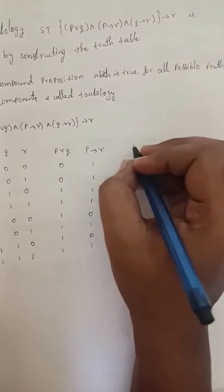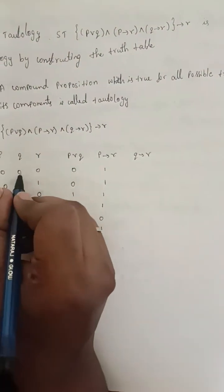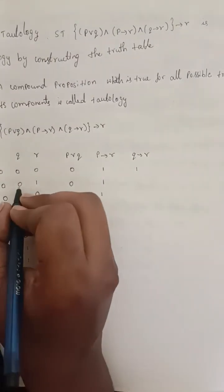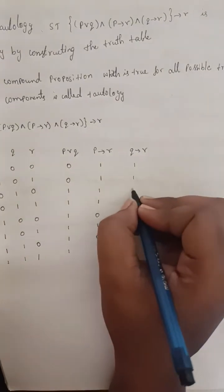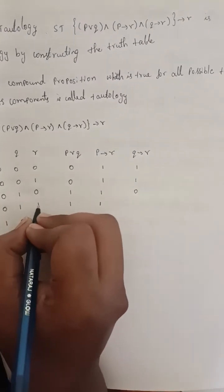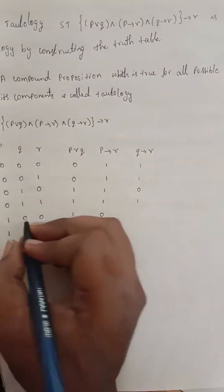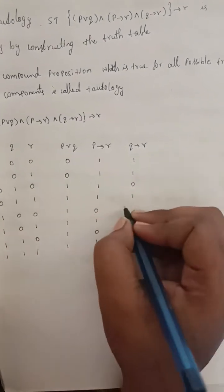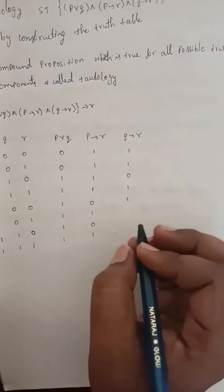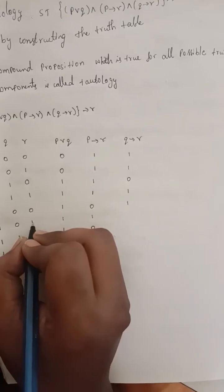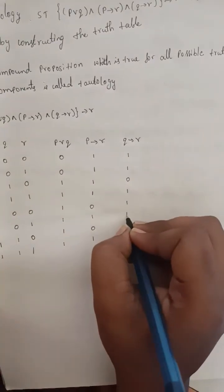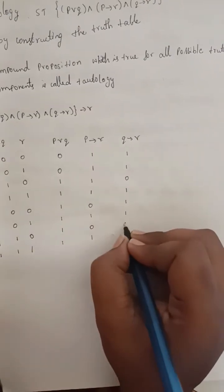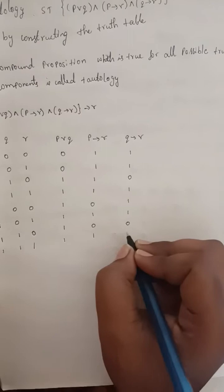Next, compute Q→R. Q→R is false only when Q is true and R is false. Q false, R false: true. Q false, R true: true. Q false, R false: true. Q false, R true: true. Q false, R false: true. Q false, R true: true. Q true, R false: false. Q true, R true: true.